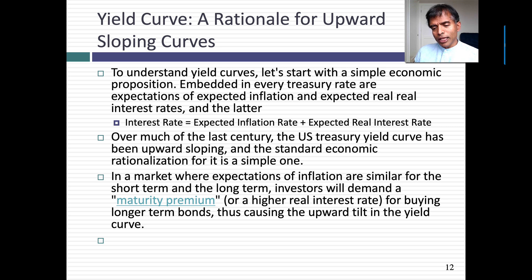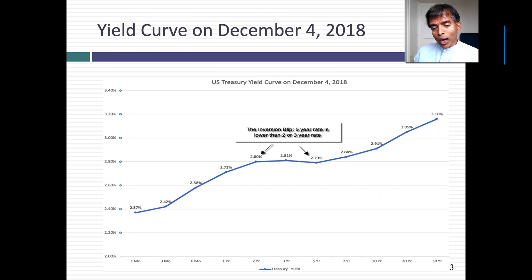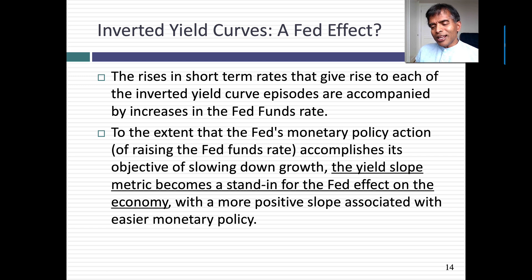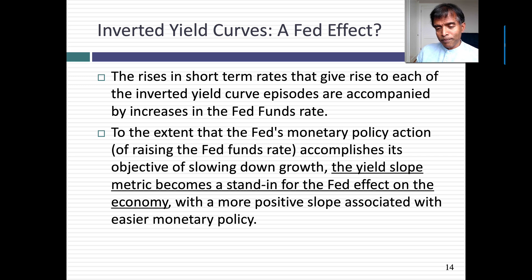But once in a while the yield curve does get downward sloping, and people freak out. For example, on December 4th, 2018, a portion of the yield curve — between the two-year and the five-year — became downward sloping, and people were convinced the end of the world was coming. Why? Because if you look at downward sloping yield curves over time, there is indirect evidence that they seem to preview a decline in the economy — that economic growth is going to drop off, maybe even a recession. A downward sloping yield curve has been used by many as a signal that the economy is going into a slowdown or a recession.